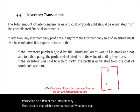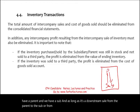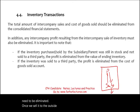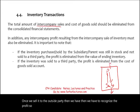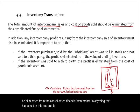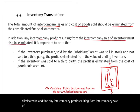We have a parent and a sub, and as long as it's a downstream sale from the parent to the sub, or from the sub to the parent, it's inside the box and needs to be eliminated. Once we sell it to an outside party, then we recognize the profit. The total amount of intercompany sales and cost of goods sold should be eliminated from the consolidated financial statement — anything that happens inside the box and doesn't spill to the outside must be eliminated. In addition, any intercompany profit resulting from an intercompany sale of inventory must also be eliminated.